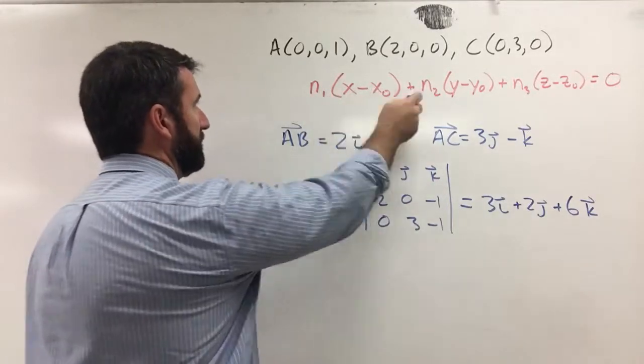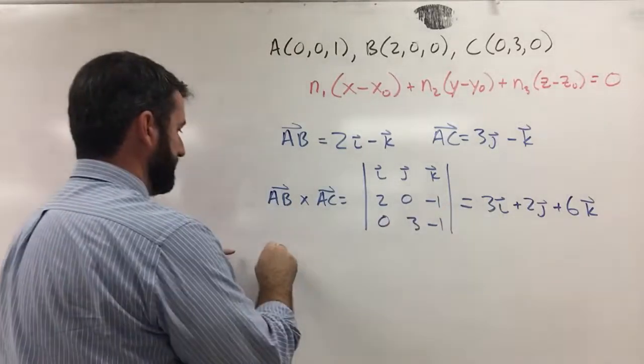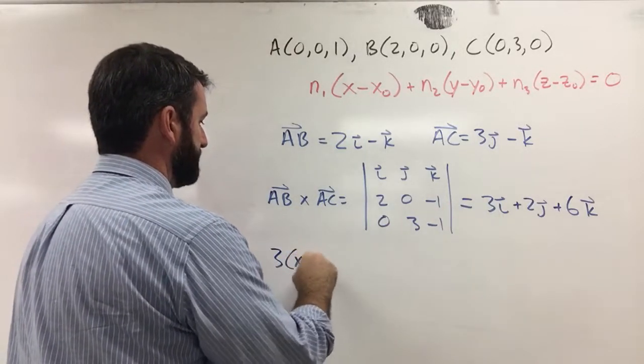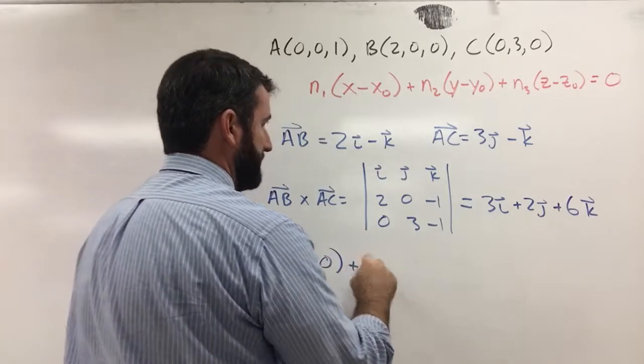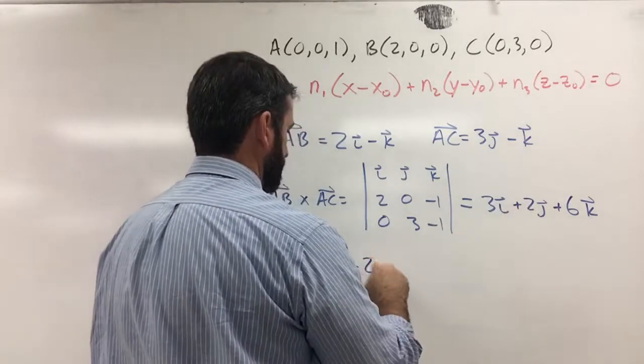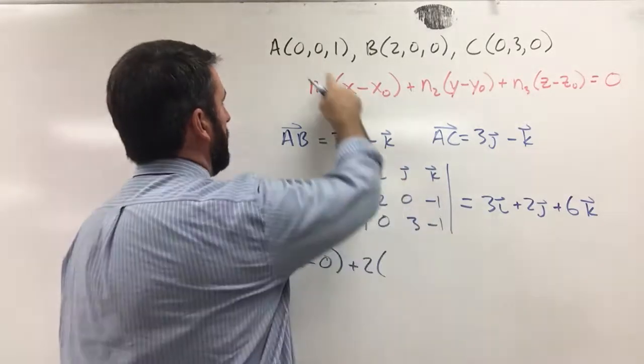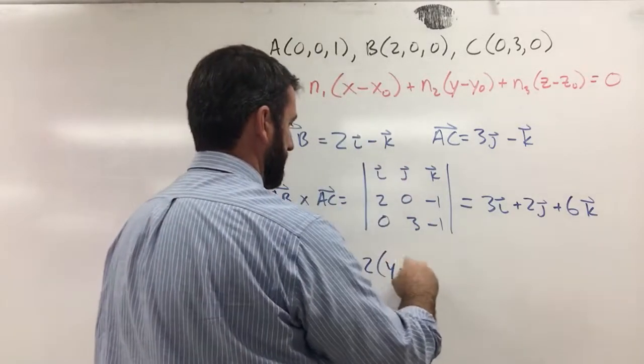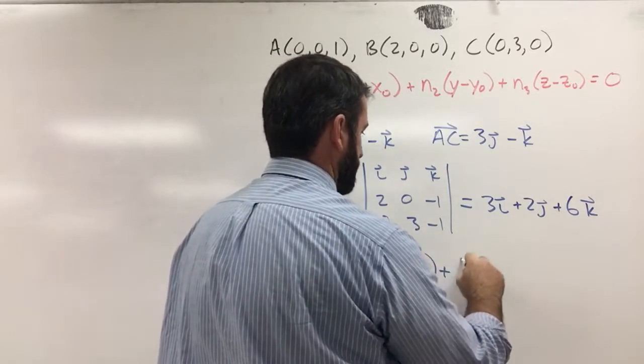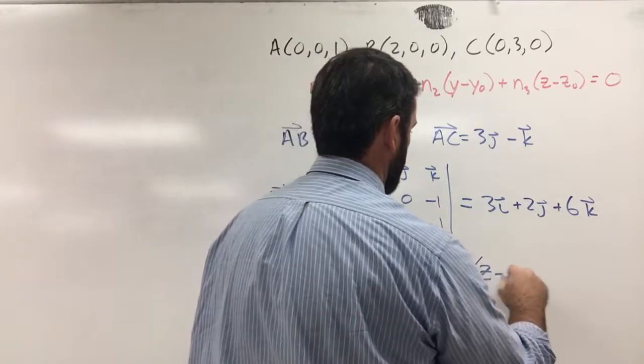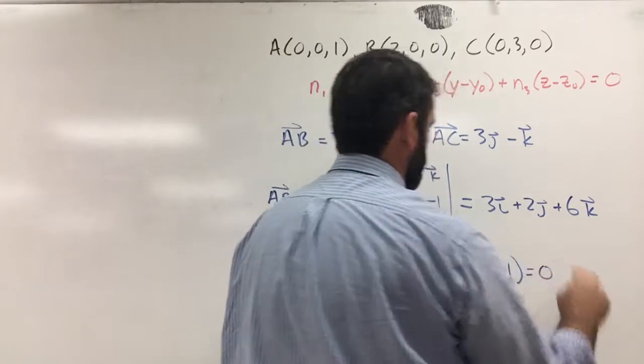And we can plug this into our formula. We get n1, which is 3, times x minus x0, which is 0, plus n2, which is 2, times y minus y0, which is 0, plus 6 times z minus z0, which is 1. And that's going to equal 0.